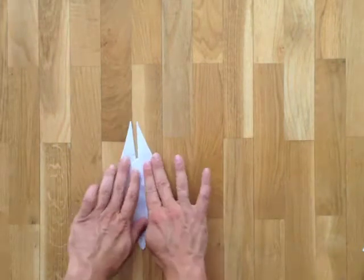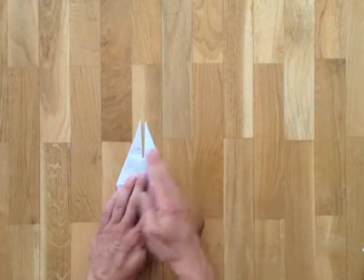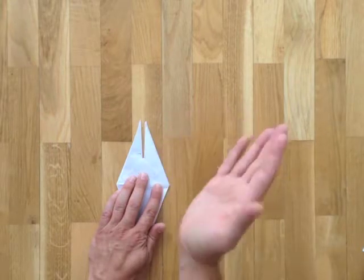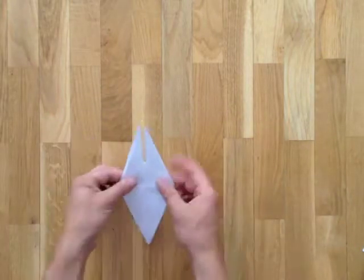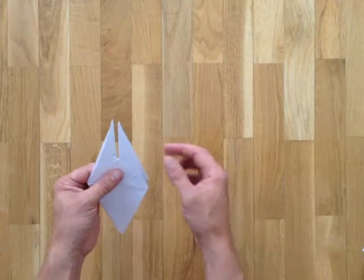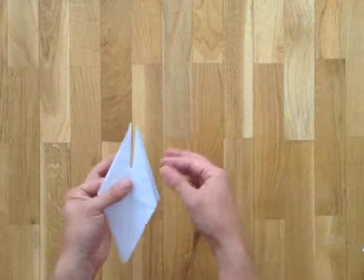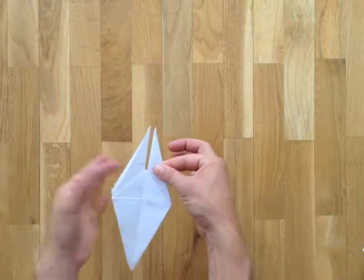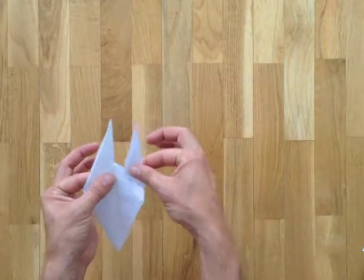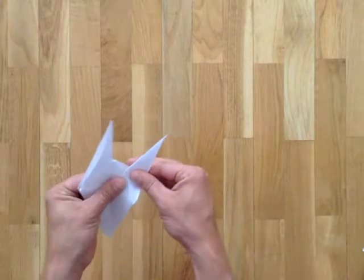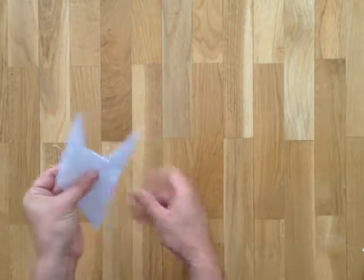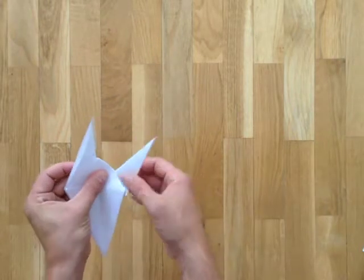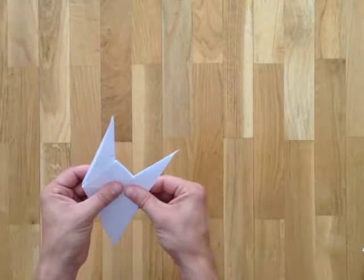you can see that on the top, there will be two sort of arms. One of these is going to be the head, the neck, and the head, and the other will be the tail. To do this, it's quite simple. You just pinch here, and you pinch on the other side, and just pull it down, and fold. Pull it down, and fold.